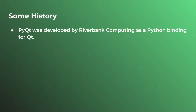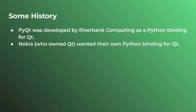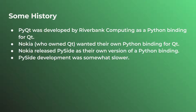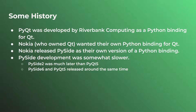However, Riverbank Computing is not the company that originally owned Qt. At the time, Nokia actually owned Qt, and they wanted their own Python binding for Qt. So because they wanted an alternative to PyQt, they went ahead and developed one themselves, which is now known as PySide. PySide's development was somewhat slower — they lagged behind, especially with the release of Qt5. PyQt5 came out a long time before PySide 2. However, now with Qt6, they released at the same time, and that's why both are now very popular alternatives for developers.